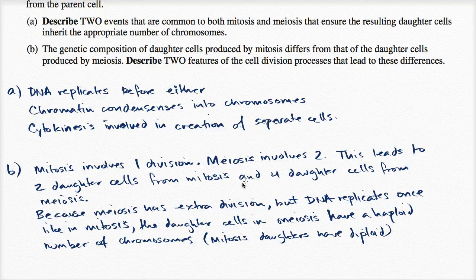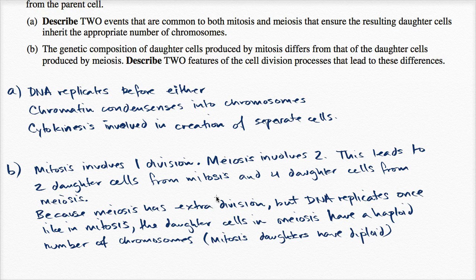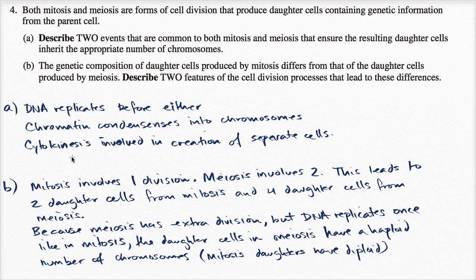Those are probably the two strongest differences. But you could also talk about other things, such as crossing over occurring in meiosis but not in mitosis, or the separation and independent assortment of homologous chromosomes that occurs in meiosis but not in mitosis. There's a bunch of things you could discuss, but it's nice that you only need to list two for each part of question four.